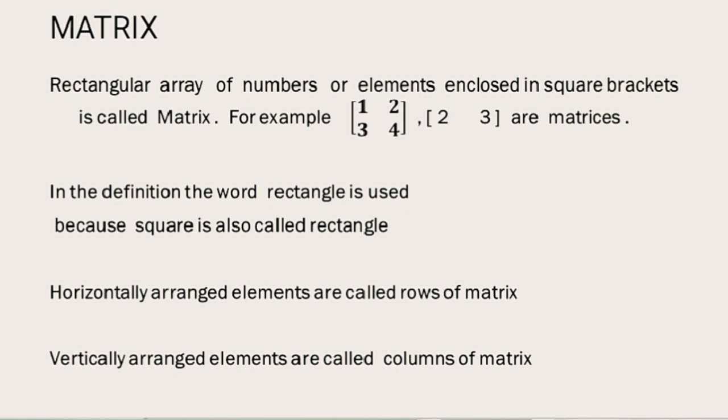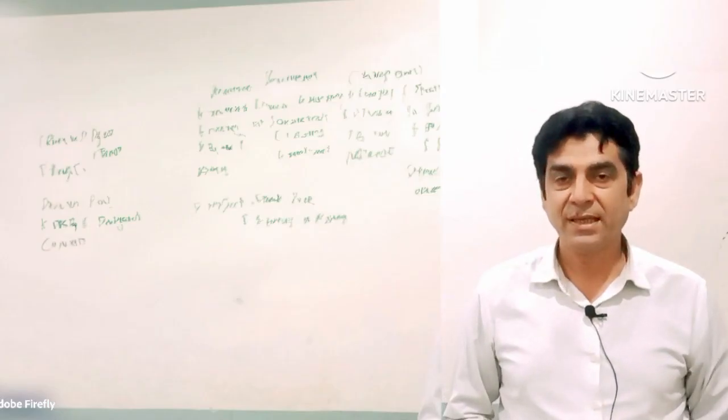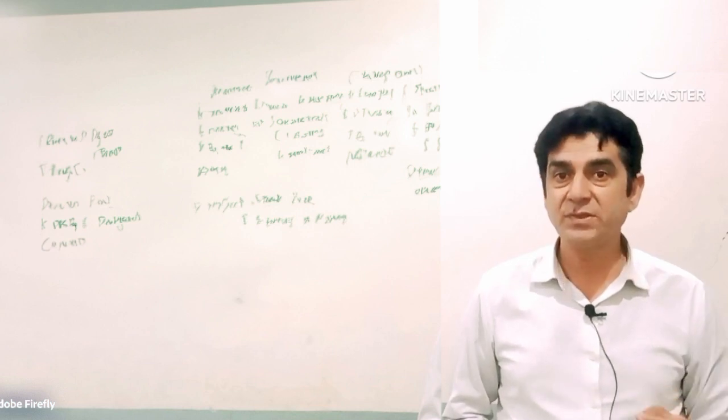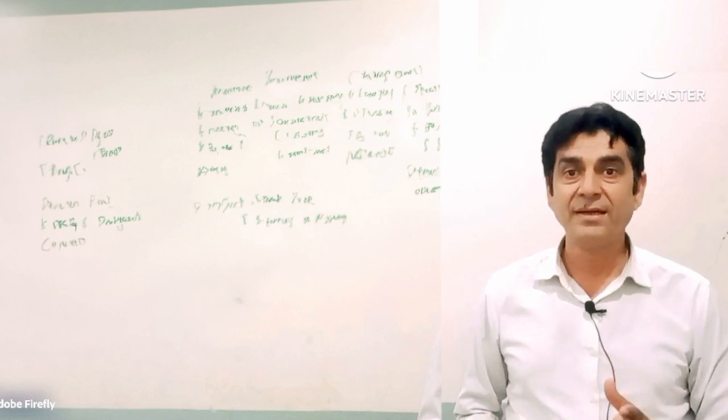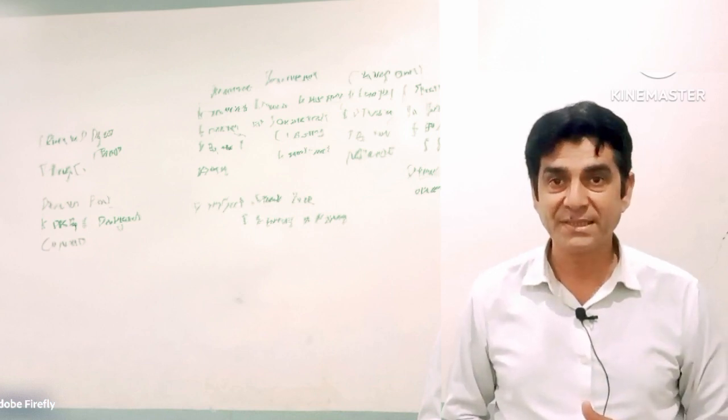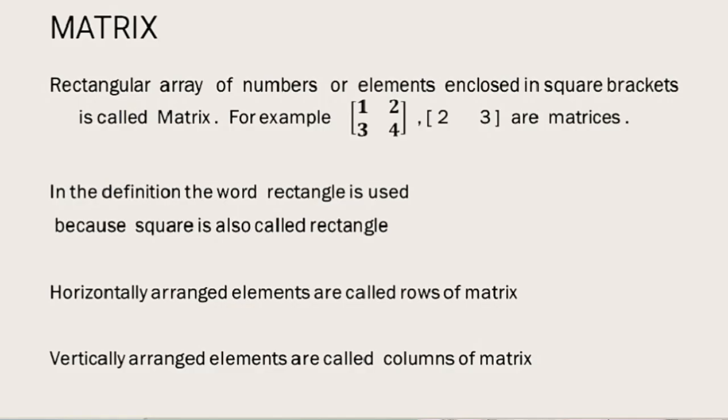Matrix is a rectangular array of numbers or elements enclosed by square brackets. Here the word rectangular is used because a square is also a rectangle. So in matrix there are elements horizontally arranged, and these are called rows of matrix. Vertically arranged elements are called columns of matrix.